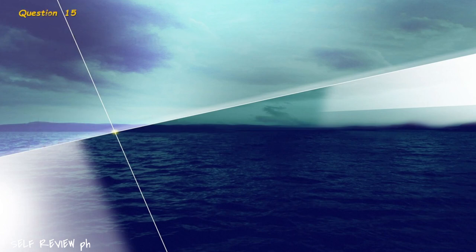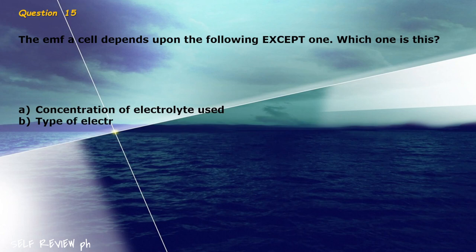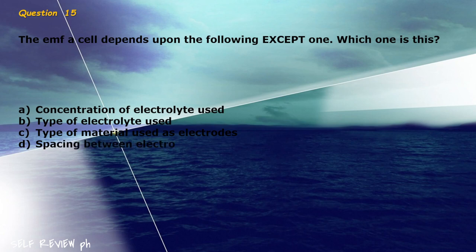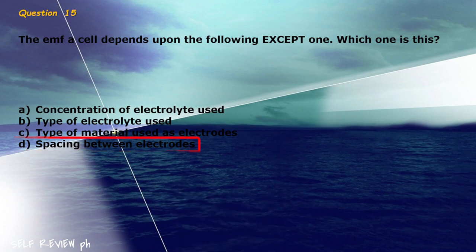Question 15: The EMF of a cell depends upon the following except one. Which one is this? A) concentration of electrolyte used, B) type of electrolyte used, C) type of material used as electrodes, D) spacing between electrodes. The correct answer is letter D, spacing between electrodes.